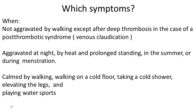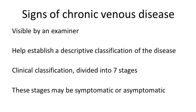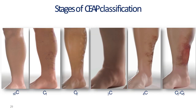Walking on a cold floor usually gives some relief. The signs, of course, are the visible varicosities. You have to describe them and place them into the appropriate classification, as discussed earlier. All stages could be symptomatic or asymptomatic. This is supposed to be a normal-looking leg, but the patient was giving symptoms — and that's what we call C0 symptomatic.